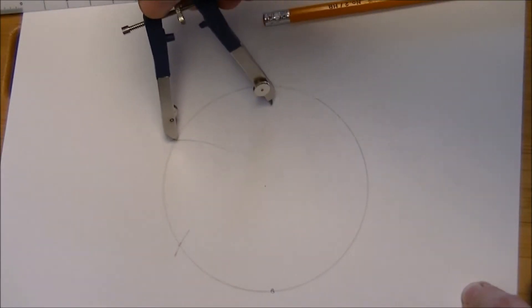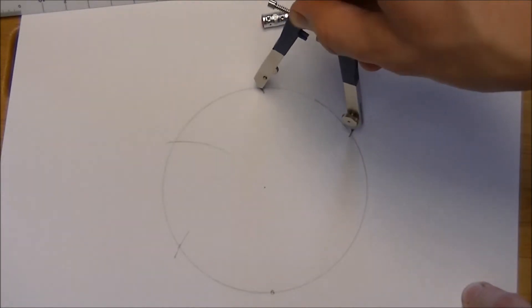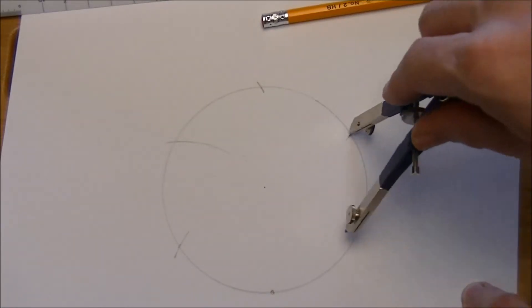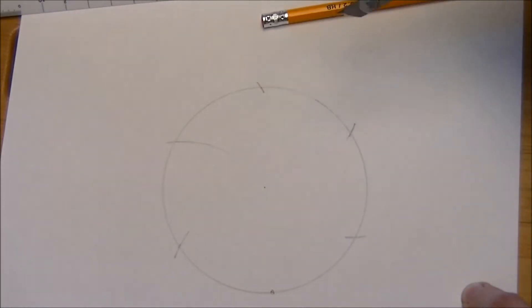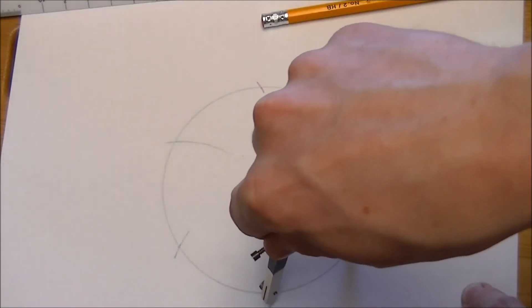and so on. And whenever you're making any kind of regular polygon with a circle, a good way to check is to set your radius, or set your compass. Uh oh,